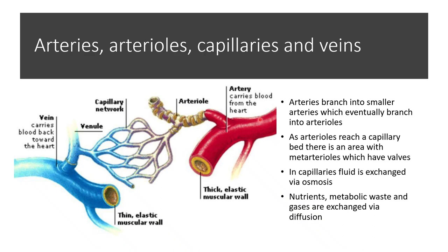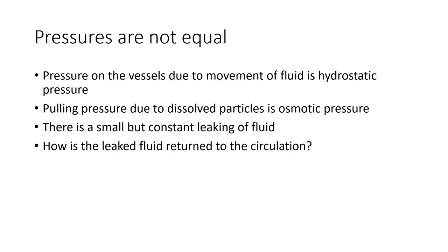Blood moves from arteries to arterioles to what are called metarterioles, which can control blood flow into the capillaries. Gaseous exchange can occur and then it goes through the venules. Most of this is driven by either diffusion or osmosis. One thing to remember is that pressure is not equal in all blood vessels. As blood vessels branch and get smaller, they actually maintain more space in the lumen. Using the equation P1V1 = P2V2, as you get more space you have more volume, and so the pressure will decrease.